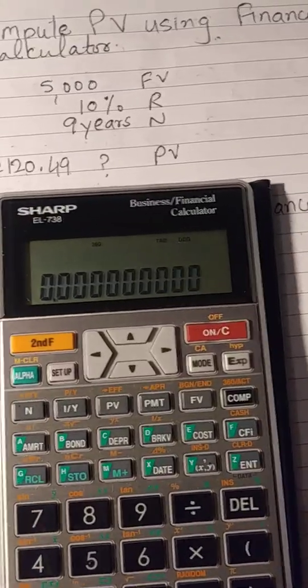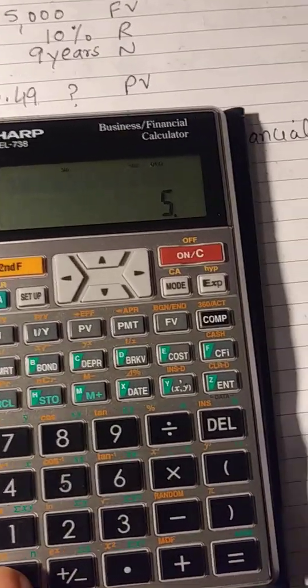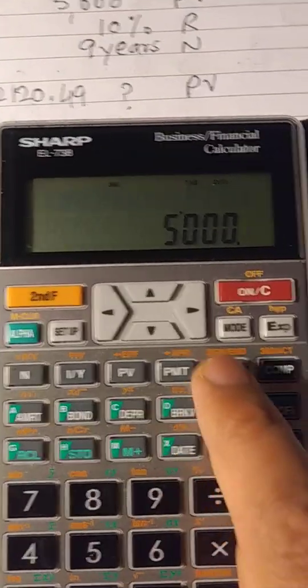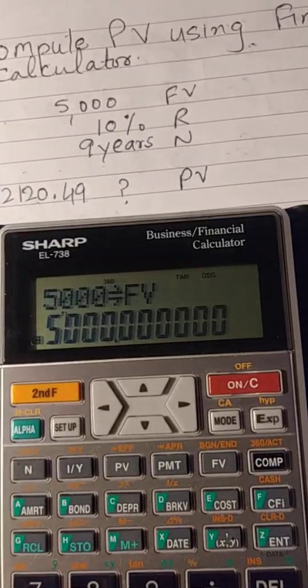Okay, so 5000 future value. So press 5000, and you can have a look at the button here, future value right.